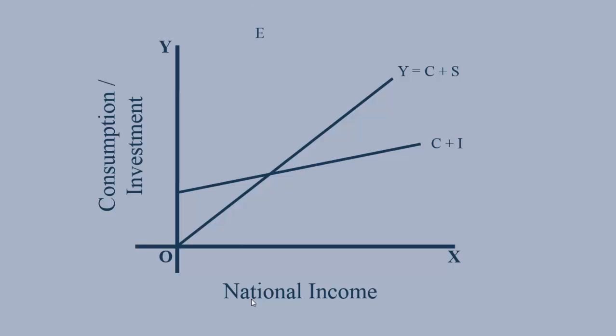E is the Equilibrium Point. Y is the Equilibrium Income. To begin with, this is the condition.